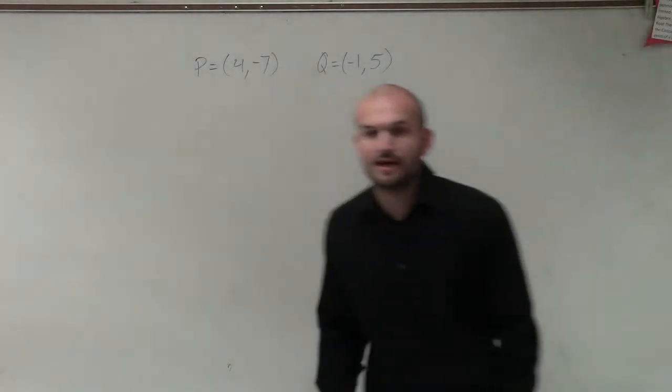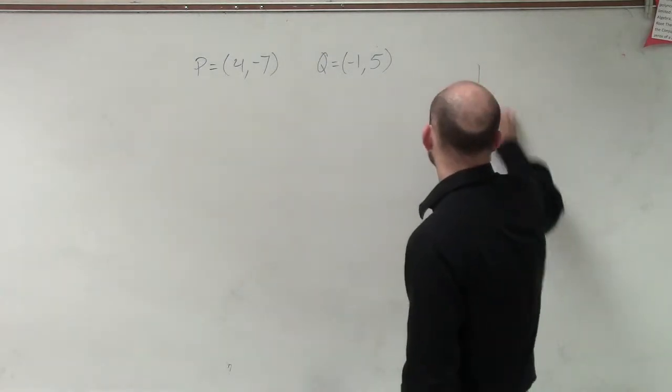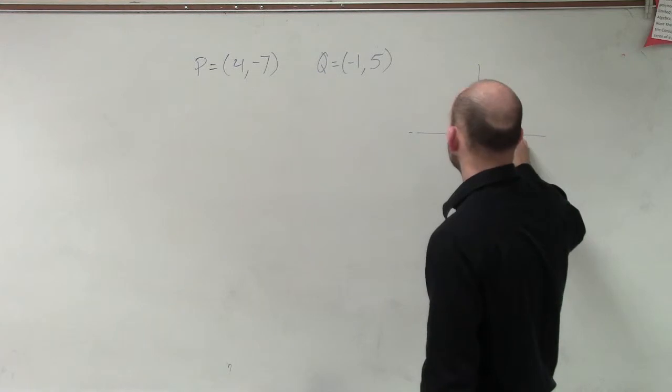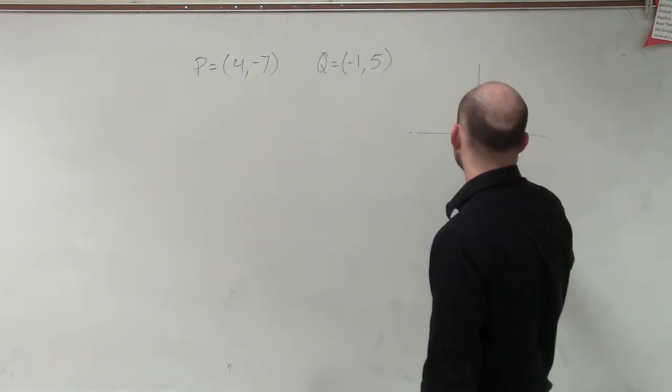So let's go and take a look at this vector. What we have is a vector that, if we were going to graph this, we'd have it positive 4, negative 7.